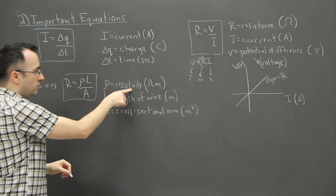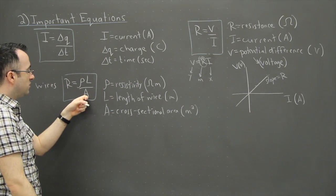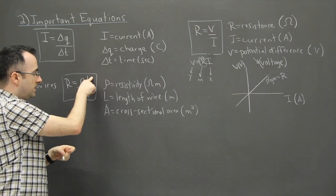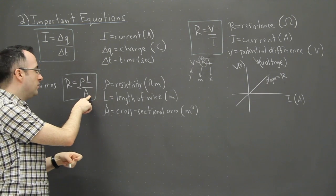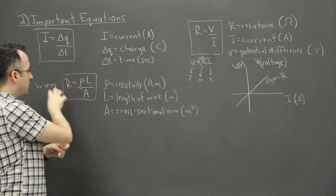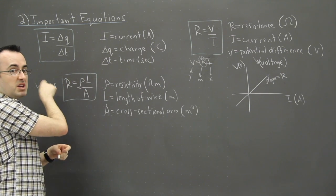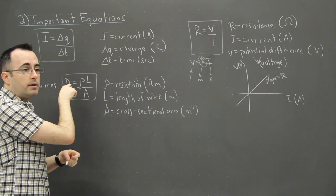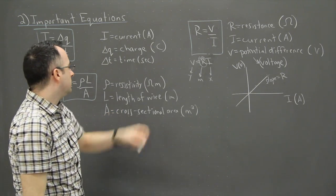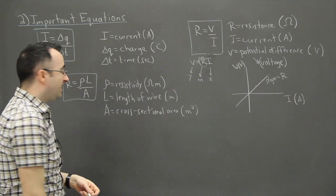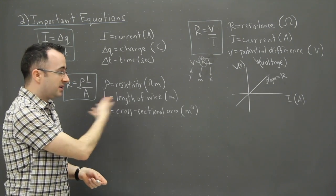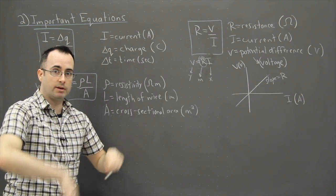That's how we know the units of resistivity: A is meters squared and L is meters, so meters over meters squared leaves units of meters. If we solve for rho, that meter comes over, giving us ohm-meters — that's why resistivity is measured in ohm-meters. It's not very complex; just use the equation and away you go.